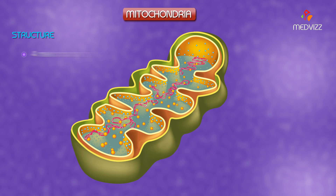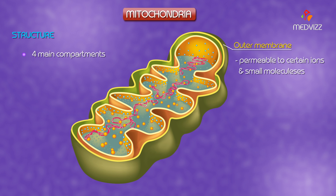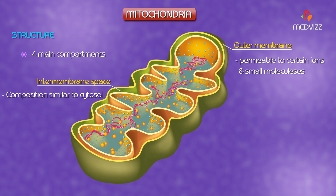Mitochondria have four main compartments. The outer membrane, which is permeable to certain ions and small molecules, and the intermembrane space, which has a composition similar to that of cytosol.